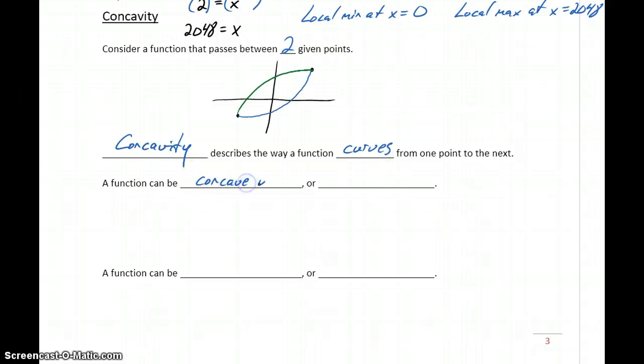So a function has the potential to be concave up, meaning it opens upward. Something like this, a parabola pointing up, would be concave up.